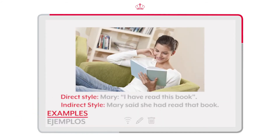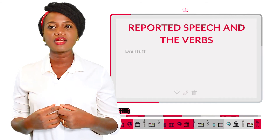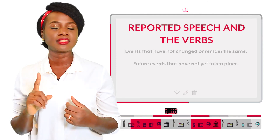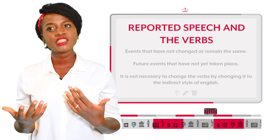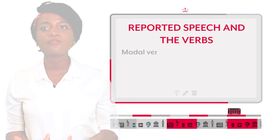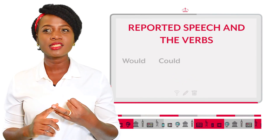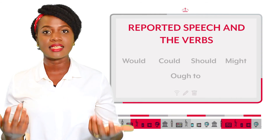Example: Mary said, 'I have read this book.' Mary said she had read that book. Reported speech and the verbs: when we talk about events that have not changed or remain the same, as well as future events that have not yet taken place, it is not necessary to change the verbs. Modal verbs are also affected by reported speech, with the exception of 'would', 'could', 'should', 'might', and 'ought to', in which everything remains as it was.